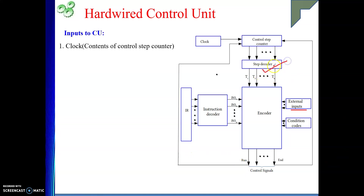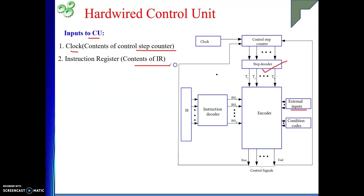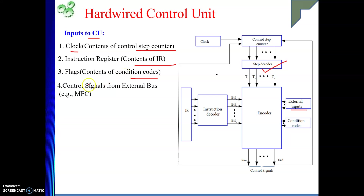Though I said step decoder, this step decoder itself is guided by the clock. Clock is one of the inputs — the system clock is one of the inputs to your control unit. Indirectly we are saying: contents of control step counter connected to this decoder, then instruction register contents of IR, then flags — contents of condition code. Flag is also known as status word, status register, or condition code register — many names but they all mean the same, there are various flags. Then control signals from external bus, that is your MFC coming from memory. Using these four inputs, we generate the signals.